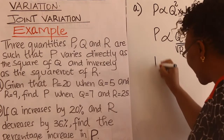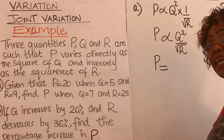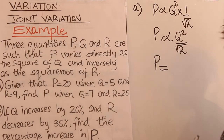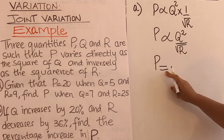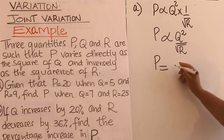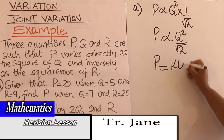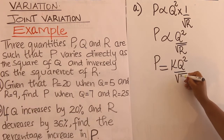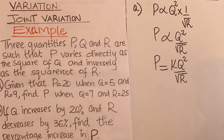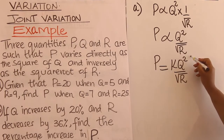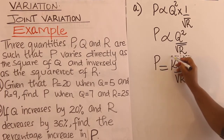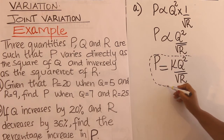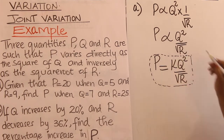The next step, just like we have done in direct and inverse variation, you replace the proportionality sign with an equal sign. And once you do that, you multiply the other side by K. You end up with P = KQ²/√R. Keep this in mind because it is the connecting equation.